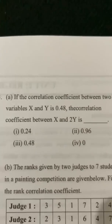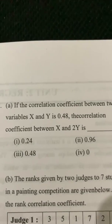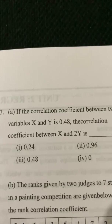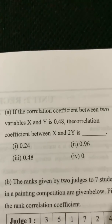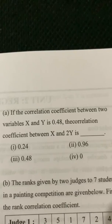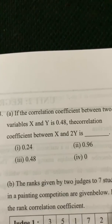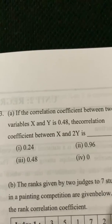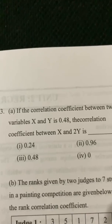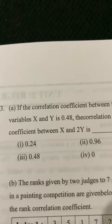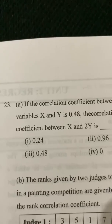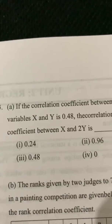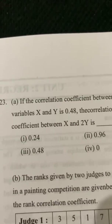If the correlation coefficient between two variables x and y is 0.48, we need to find the correlation coefficient between x and 2y. Since multiplying a variable by a constant does not change the correlation, the correlation coefficient between x and 2y is also 0.48.